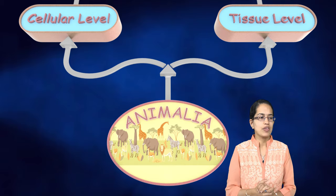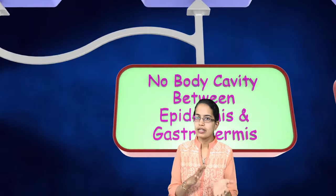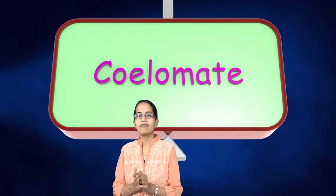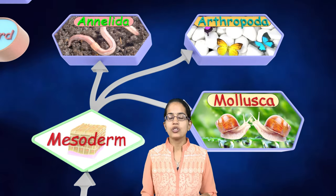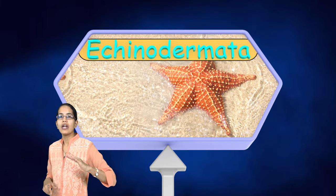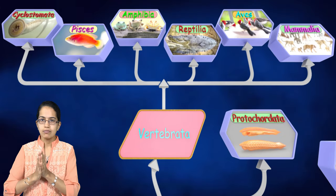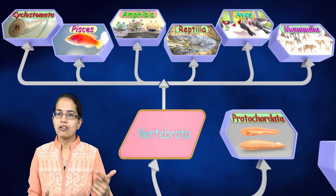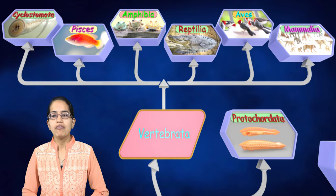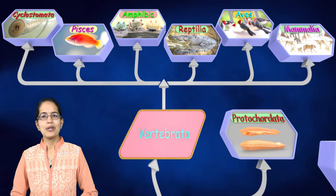A quick recap of the animal kingdom classification: cellular level — Porifera. Tissue level with no cavity between epidermis and gastrodermis — Coelentrata and Platyhelminthes. Pseudocoelomates — Nematoda and roundworm. Coelomates divided into mesoderm types: Annelida, Mollusca, and Arthropoda, and endoderm types: Echinodermata without notochord, Protochordata with primitive notochord in larval stage, and Chordata or Vertebrata with a vertebral column, further subdivided into Cyclostomata, Pisces, Amphibia, Reptiles, Aves, and Mammalia. We will be covering more interesting topics in the next lectures — feel free to post any doubts in the comments below.